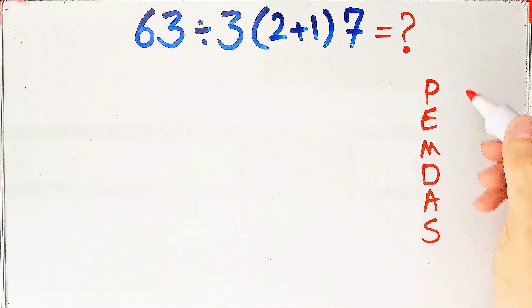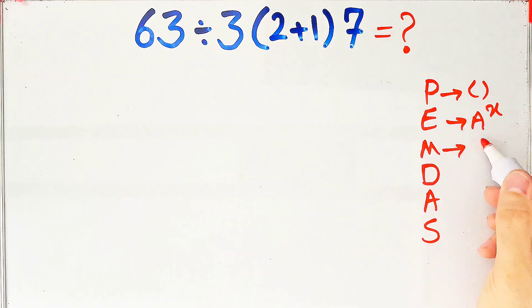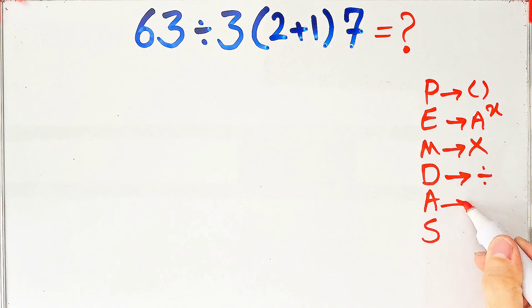In this rule, P stands for parentheses, E stands for exponent, M stands for multiplication, D stands for division, A stands for addition, and S stands for subtraction.